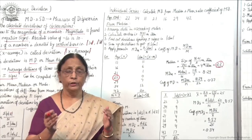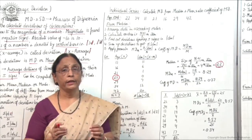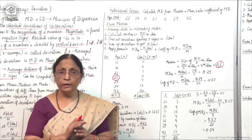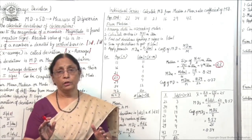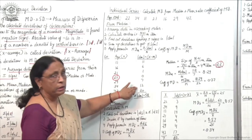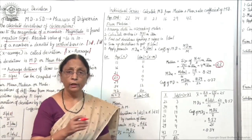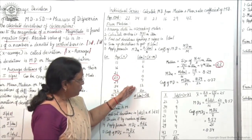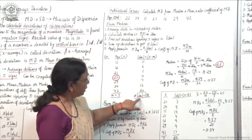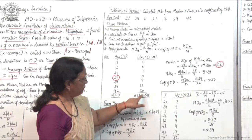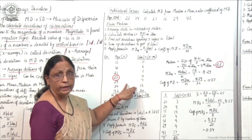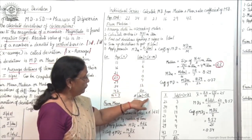Remember that you will ignore minus signs — this is the main feature of calculating mean deviation. In any other kind of dispersion, we are not ignoring minus signs. But here when we take out the deviations, minus signs are totally ignored. When you add up these values, you get σ|dm| = 58.